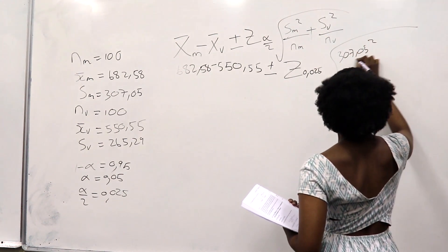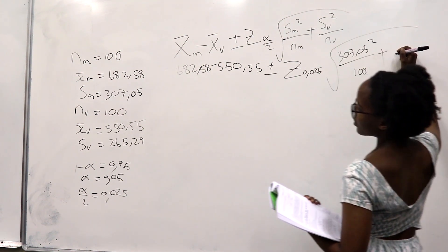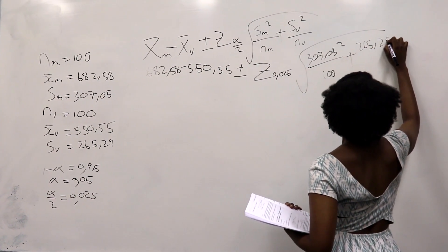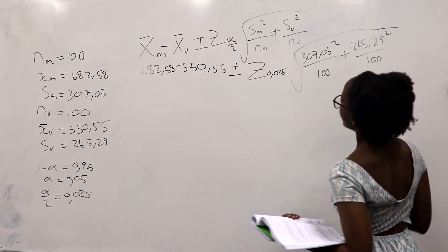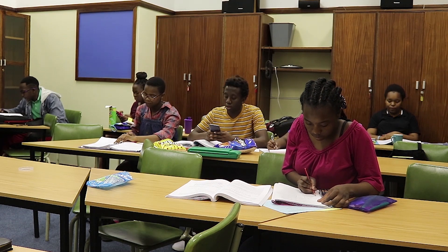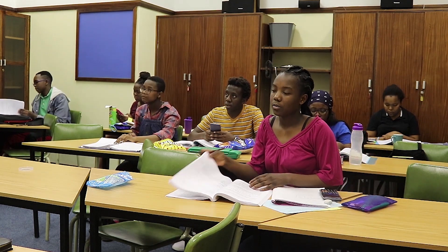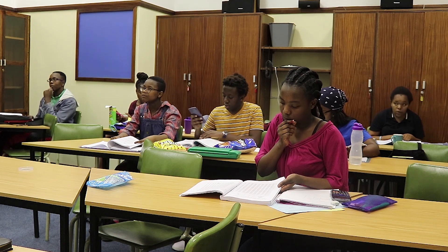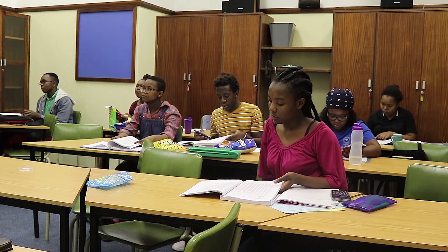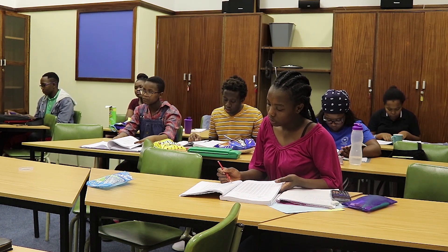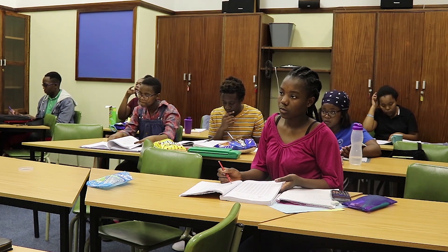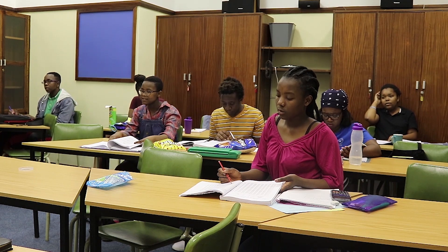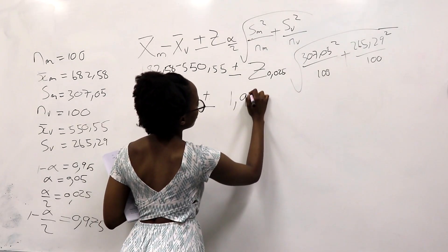307.05 squared. So can someone please calculate this for me, the difference of the means while someone finds that in the table. We have the difference as 132.03. And then what's the z from our table? Not forgetting that, for z we use the second table because we do not have this value in the first table. Therefore, we will say 1 minus alpha over 2, giving us 0.975. 1.960.